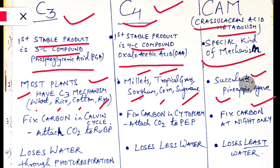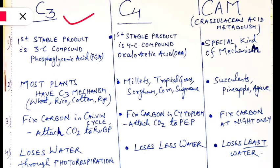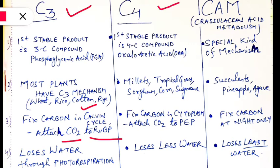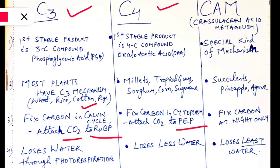In C3 plants, carbon is first fixed in the Calvin cycle when carbon dioxide attaches to RuBP — ribulose 1,5-bisphosphate. In C4, carbon dioxide first attaches to PEP — phosphoenolpyruvate — in the cytoplasm of C4 plants. In CAM, carbon fixation happens only at night to avoid water loss.